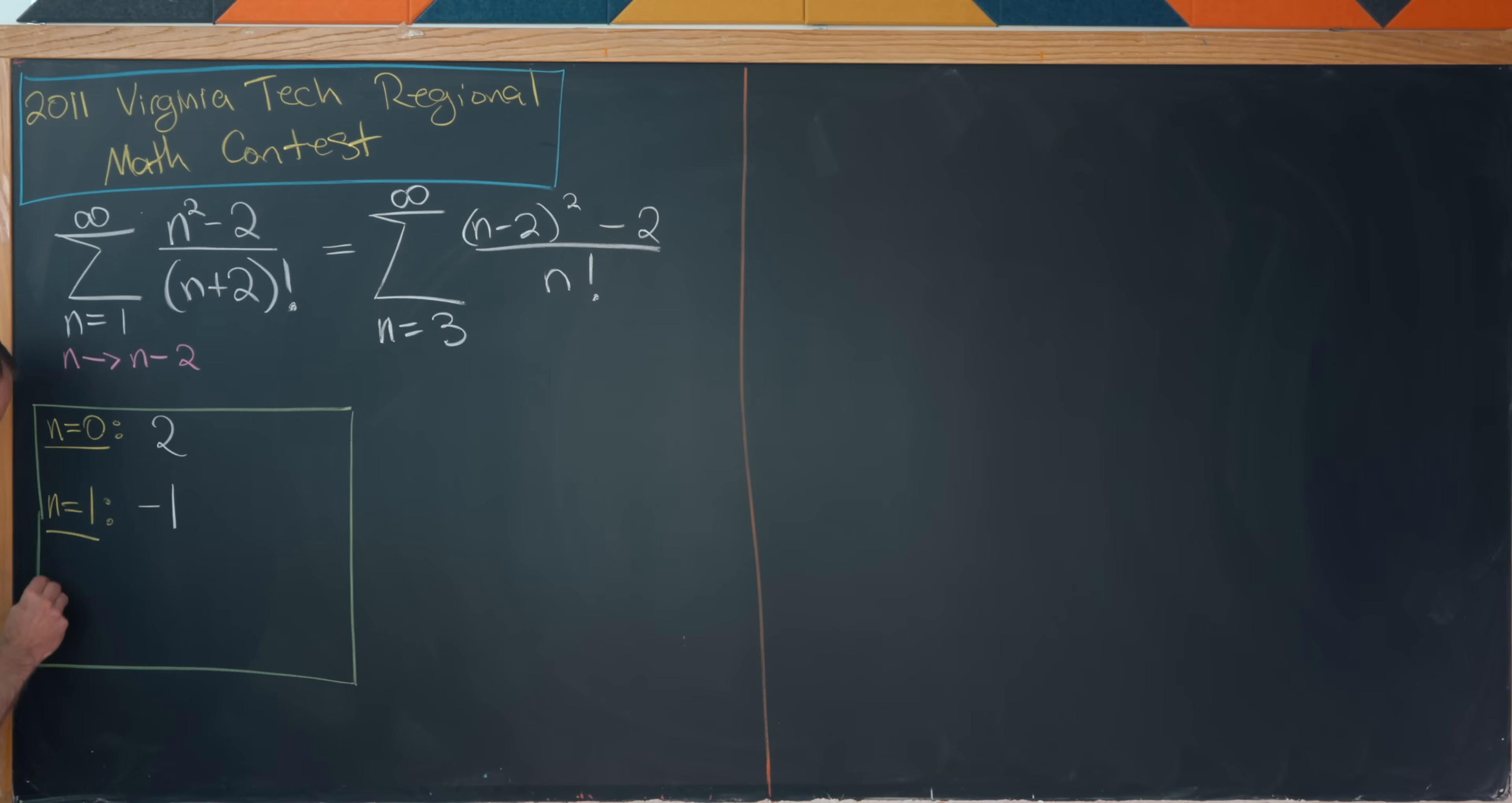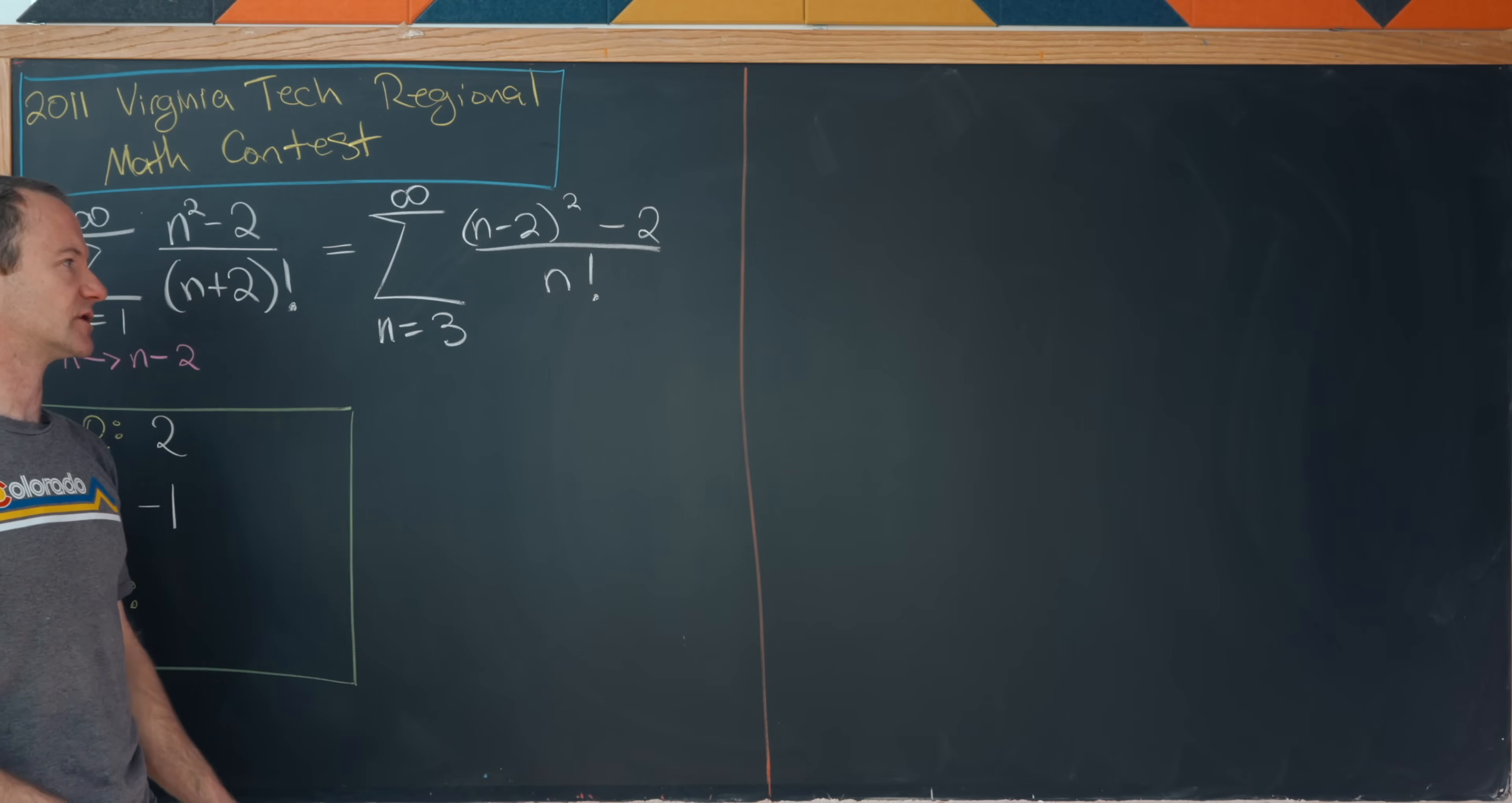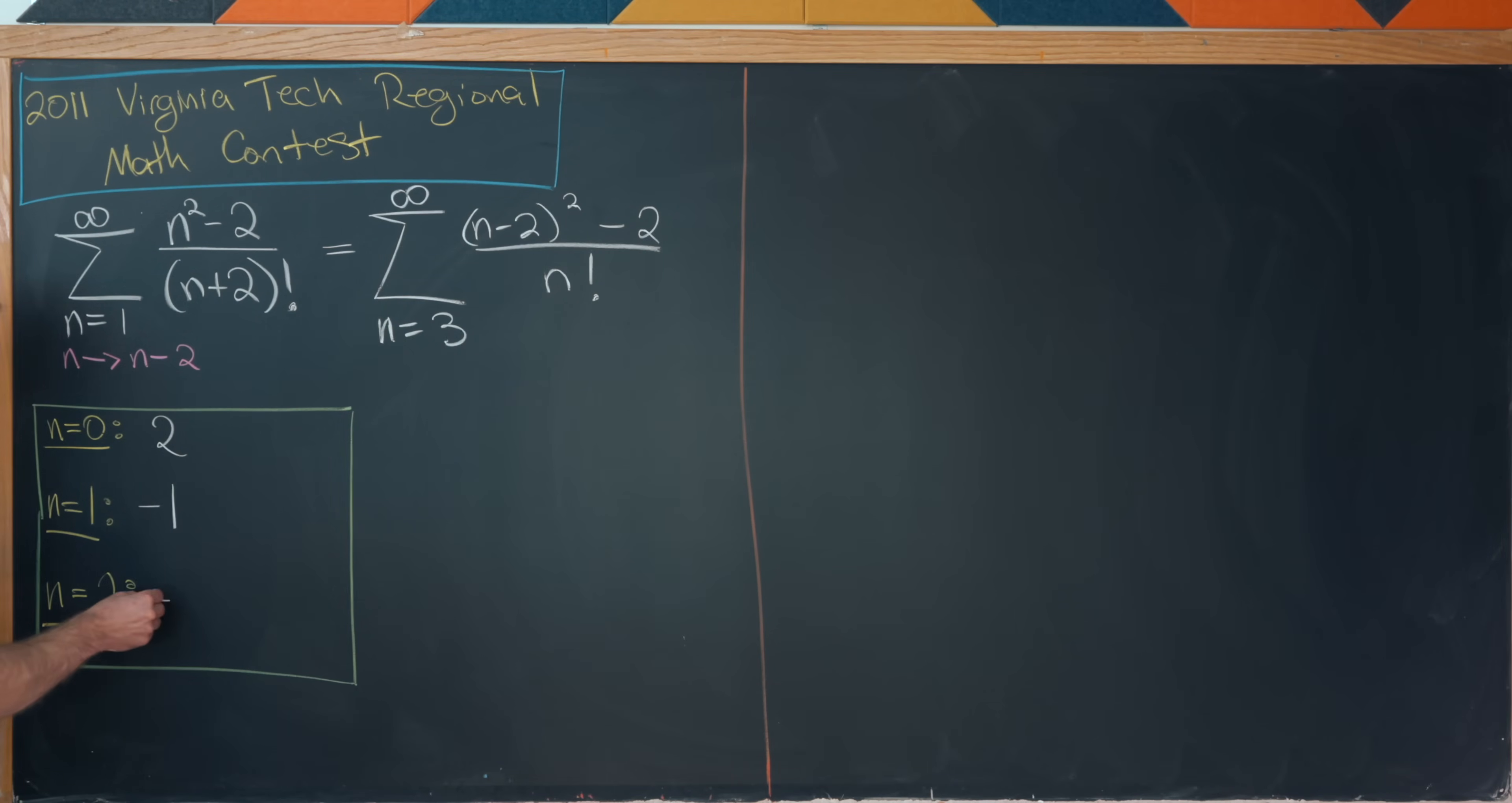And then finally, let's look at the n equals two term. Great. So my n equals two term will be two minus two quantity squared. So let's see, that'll be zero minus two over two factorial. So that's going to be another negative one.